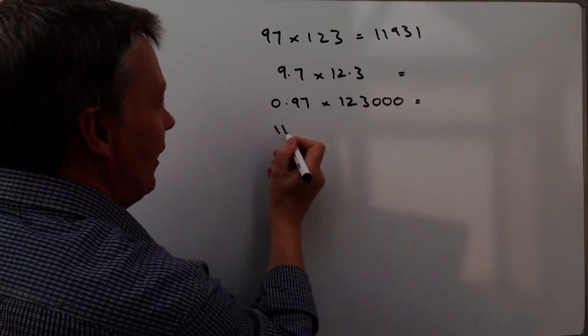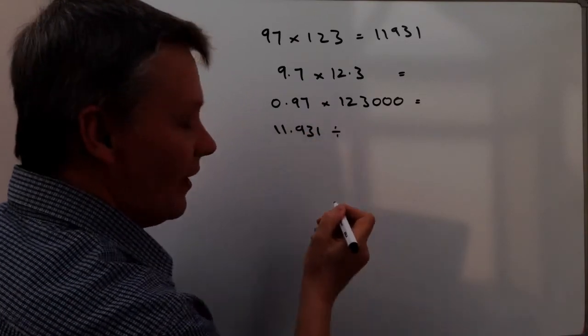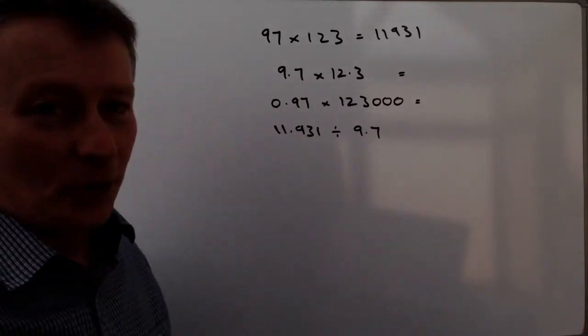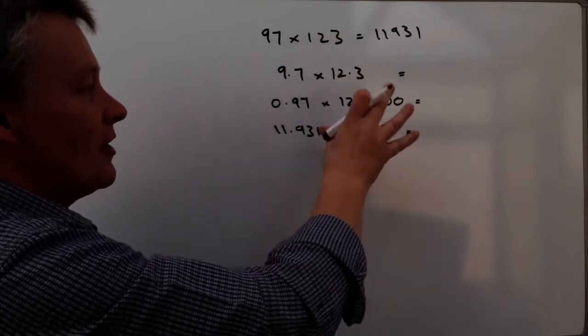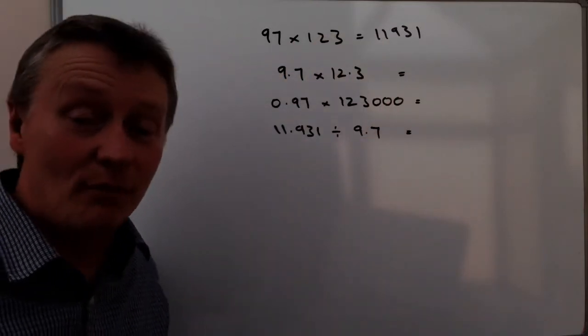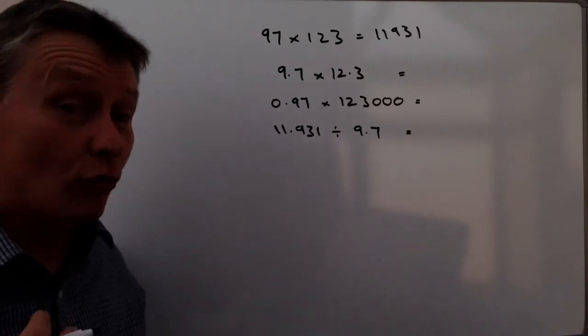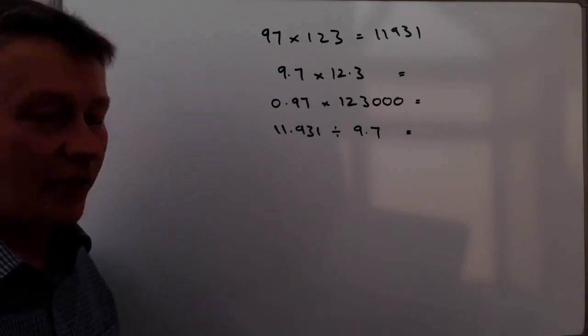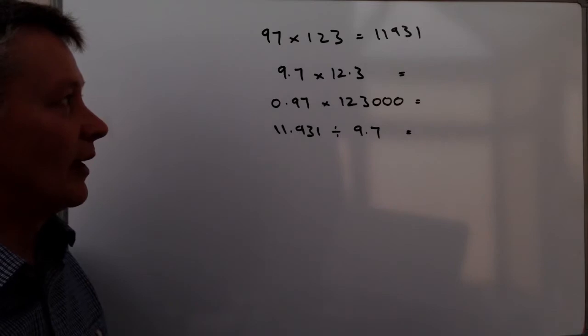And also 11.931 divided by 9.7. And it's using this piece of information to answer those questions just by moving the decimal point. And so the idea really is that you actually write down the answer. There's a couple of ways you can do this. You can actually just simply move the decimal point.